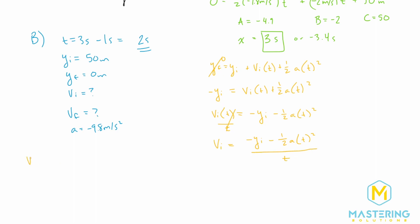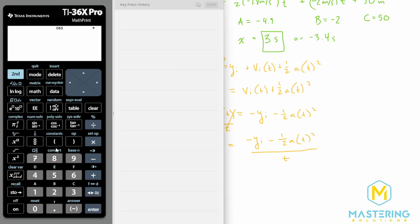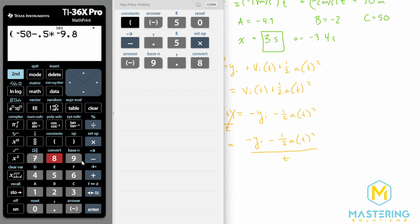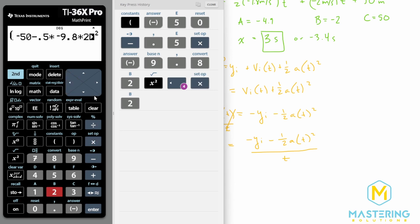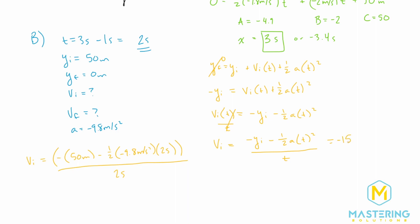Plugging in values: v_initial = (−50 − ½ × (−9.8) × 2²) / 2. That's (−50 − 0.5 × (−9.8) × 4) / 2. Calculating gives −15.2 meters per second. So the initial speed of the second stone is 15.2 meters per second downward.